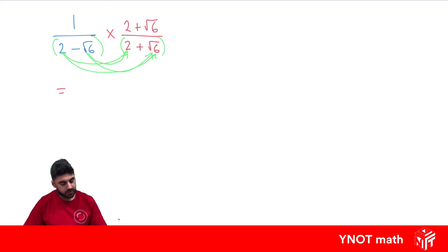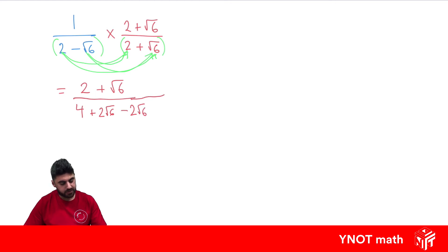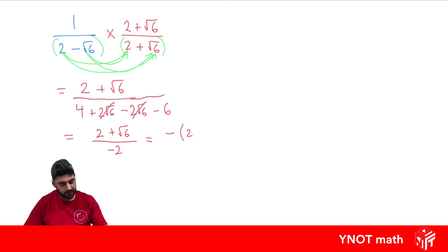In our numerator, we've got 1 times 2, then 1 times root 6, which gives us 2 plus root 6. In the denominator: 2 times 2 is 4, 2 times positive root 6 is positive 2 root 6, minus root 6 times 2 is minus 2 root 6, and minus root 6 times root 6 gives us minus 6. The plus 2 root 6 and minus 2 root 6 cancel out, leaving us with 2 plus root 6 over 4 minus 6, which is minus 2. Since negatives in the denominator aren't ideal, we move it to the numerator by wrapping a bracket, giving us minus(2 plus root 6) over 2.